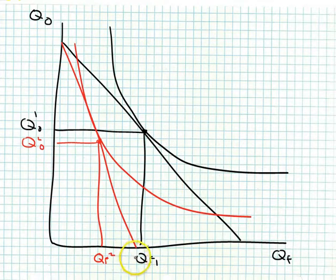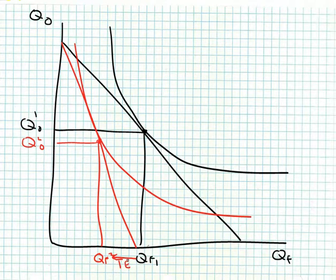QF2 is there — I have now purchased less of both other goods and food. This movement from QF1 to QF2 is the total effect. How do we break that down into an income and a substitution effect?